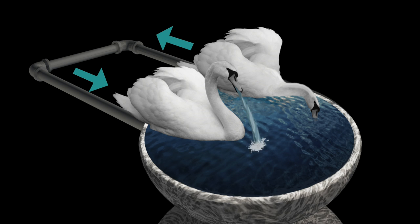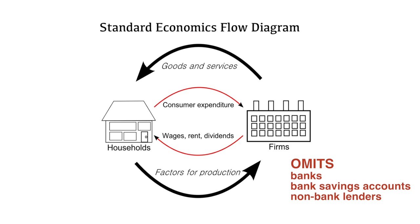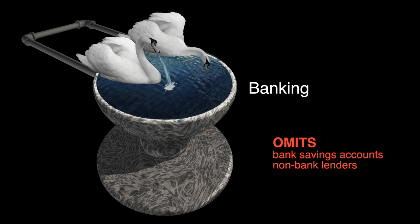I don't even know what he is modelling. In this standard economics flow diagram there isn't any money creation, banks, savings accounts, or non-bank lenders. It too shows a seamless flow. If it is banking or the whole money system he is modelling, he left out savings accounts and non-bank relenders.